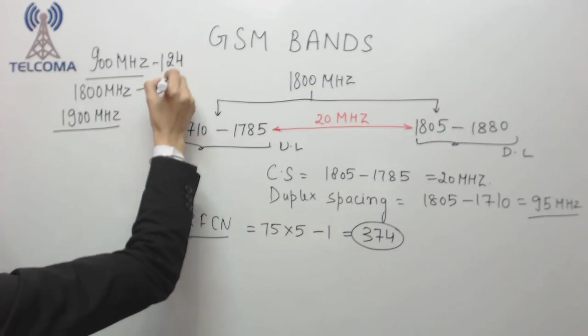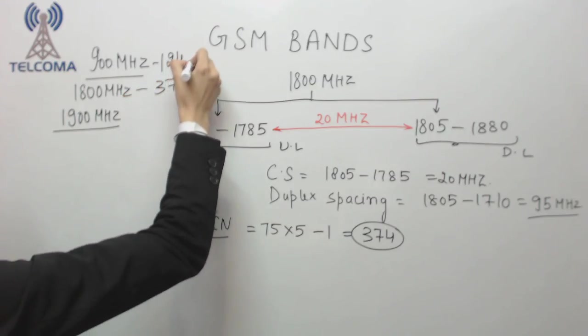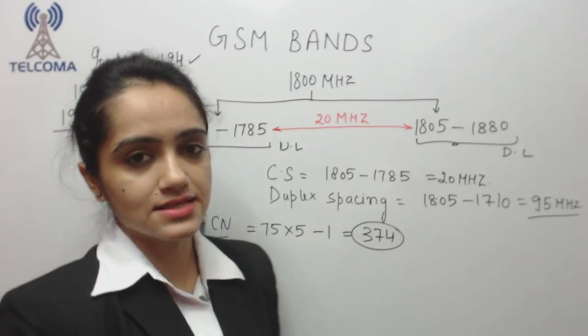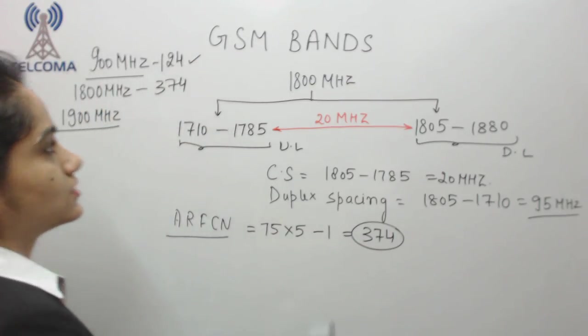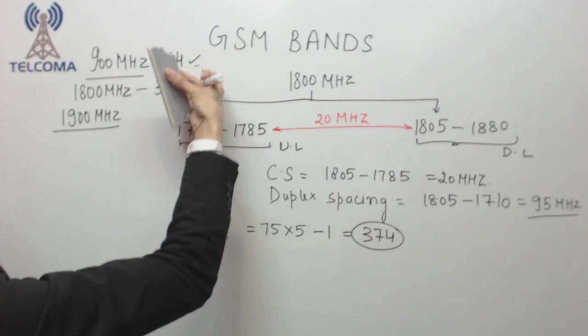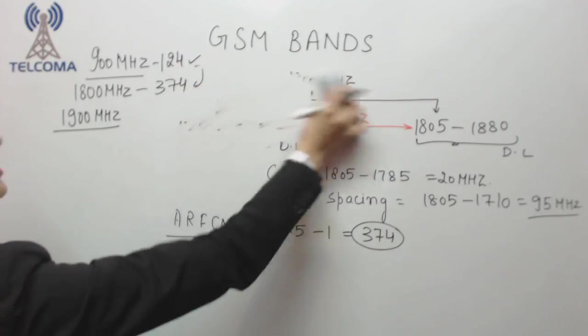Now we can see the 900 megahertz band has less capacity, so that's why we need to jump to another band which is 1800 megahertz band.